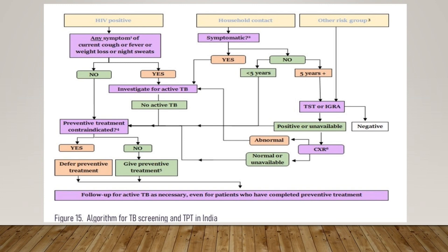For other risk groups — for example, when you are planning to give a child a biological agent and want to rule out TB before starting — go for an IGRA. Nowadays we are using too many biological agents in children. If IGRA is positive, rule out active TB and then start treatment. You will have to give TPT in these patients.